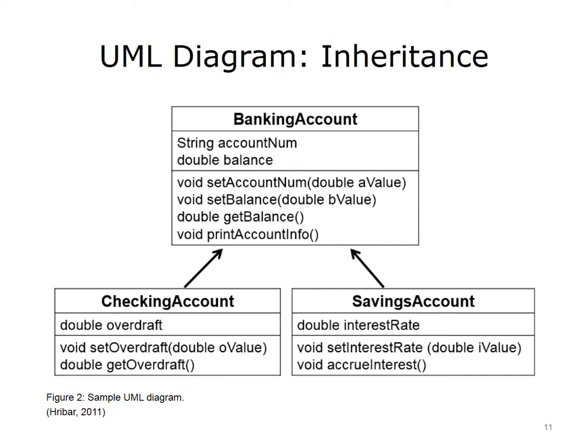The child classes also add more instance variables and methods to their classes. For example, checking account has three instance variables: the two inherited ones from banking account, plus one defined specifically for it named overdraft. It also has six methods — four that it inherited, plus two defined for it: set overdraft and get overdraft. Savings account inherits the two instance variables from banking account and has one additional one, interest rate. It also inherits four methods and has two additional methods — set interest rate and accrue interest. The child classes can also add their own instance variables and or methods to the inherited ones.